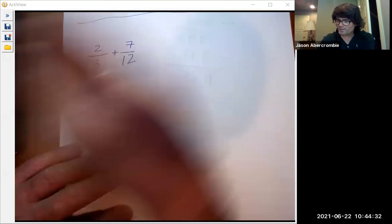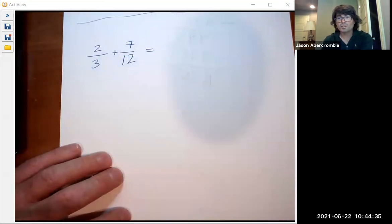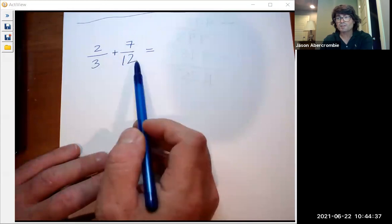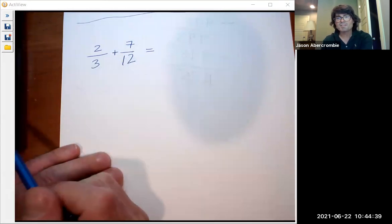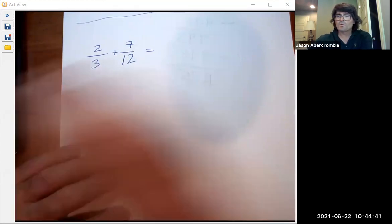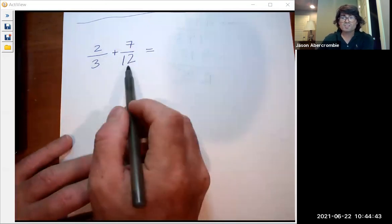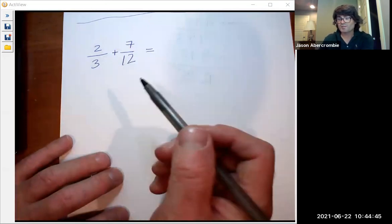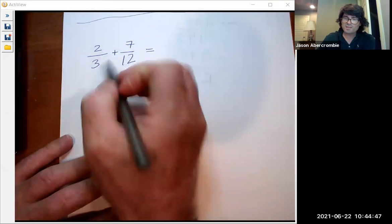Now, in this particular case, to find a common denominator, you could multiply the three times the 12 and get 36, but you don't need to. And that is because what number does three and 12, what's the smallest number three and 12 both go into? It's actually 12. So we've already got a 12 there.